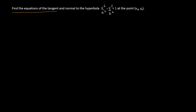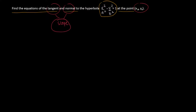Find the equations of the tangent and normal to the hyperbola x squared over a squared minus y squared over b squared equals 1 at the point (x₀, y₀). The point given corresponds to two straight lines — the tangent and normal. If we know the slope of these two lines, we can write their equations using the slope and point.